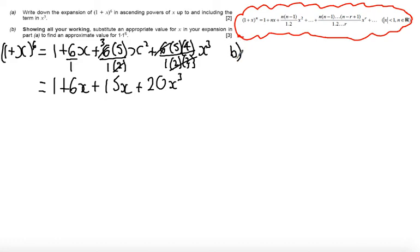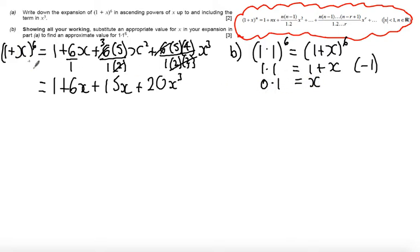Part B. Showing all your working, substitute an appropriate value for x into your expansion in part A to find an approximate value for 1.1 to the power of 6. What we're saying here is 1.1 to the power of 6 is equal to 1 plus x to the power of 6, or that 1.1 is equal to 1 plus x. If I subtract 1 from both sides, I get that 0.1 is equal to x.